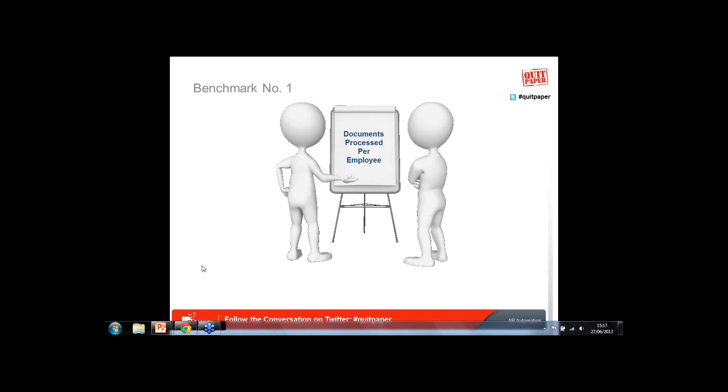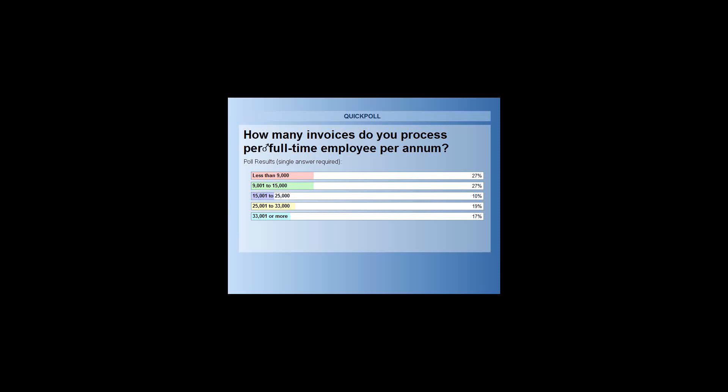62% of you responded. Coming up on your screen you will see the results. 27% of you are coming in at less than 9,000, and 17% at 33,000 invoices per head per annum or more. I am now handing back to Julie for a comment and comparison with the benchmark data we have.